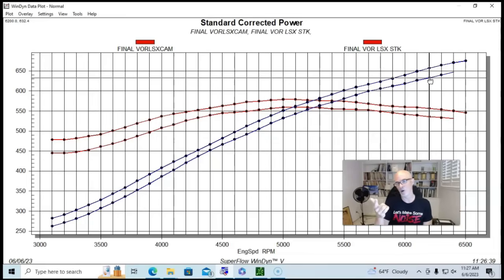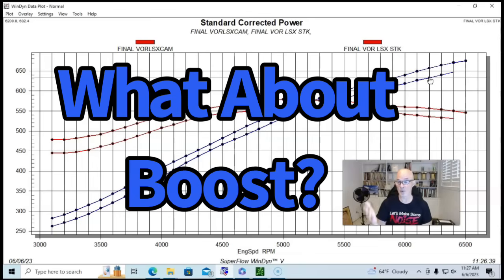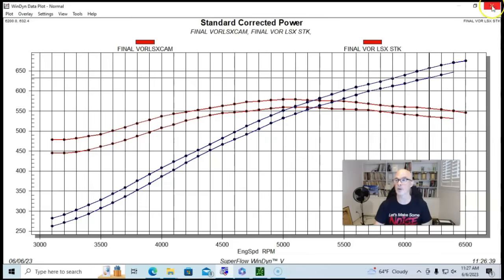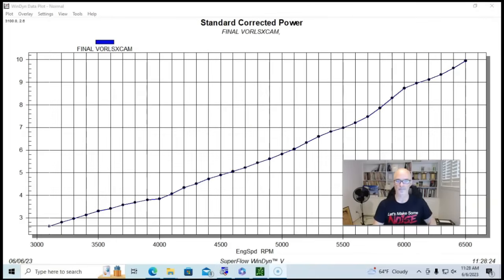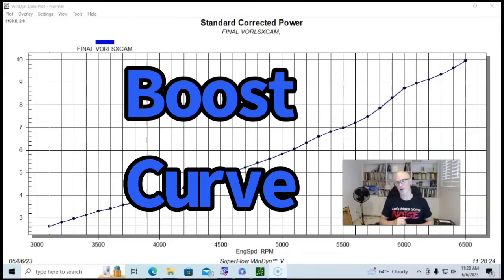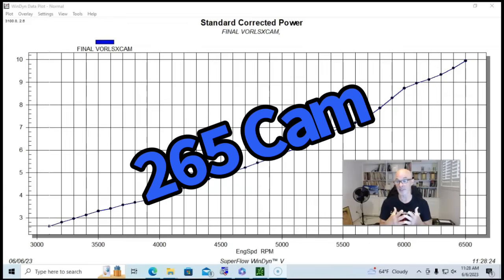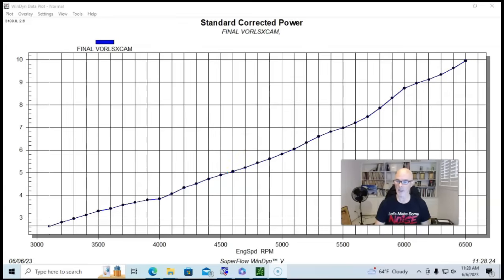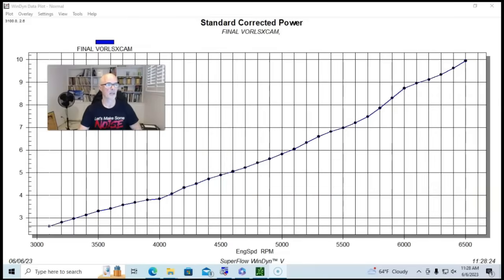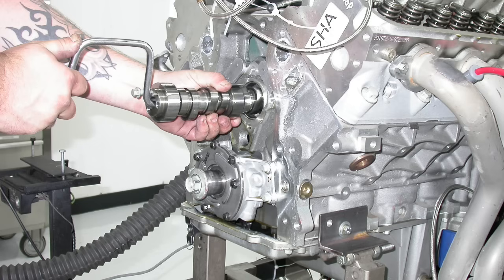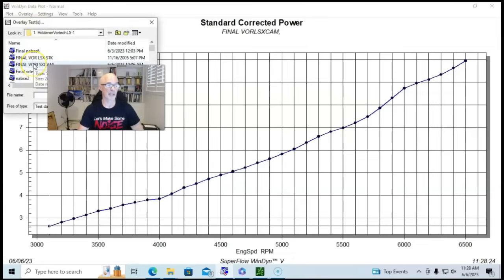Now I want to show you what happened, though, when we did do this camshaft swap. There was a change in boost pressure, as we normally see. So I'm going to go ahead and bring that up. We've got our boost curve up now, and I'm going to go over this. This is the boost curve when we ran the Vortex supercharger on the 5.7 liter LS1 with a Comp 265 camshaft. And here's what happened when we replaced the Comp cam with the stock camshaft.